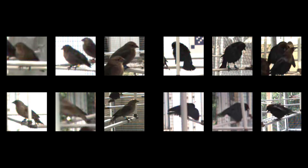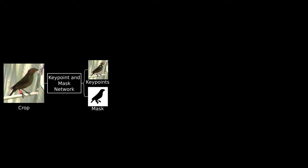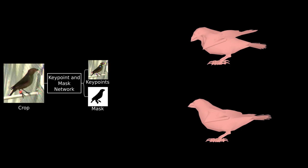Given a detected bird and associated bounding box, we first train a neural network to predict body keypoints and a mask. From the multi-view fits on birds in our dataset, we extract distributions of shape and pose for birds in the aviary.